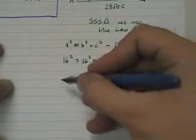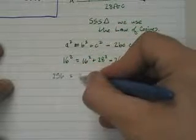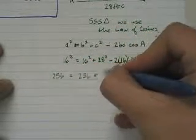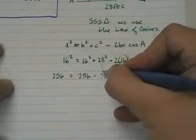Now, solve for your unknown. Your unknown, of course, is angle a. So 16 squared is 256. So I get 256 equals 256 plus 784, which is 28 squared.